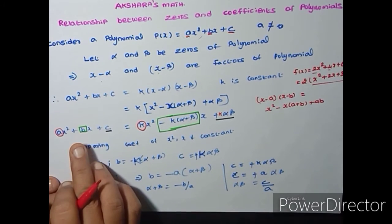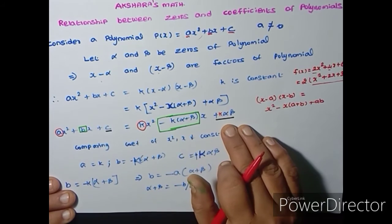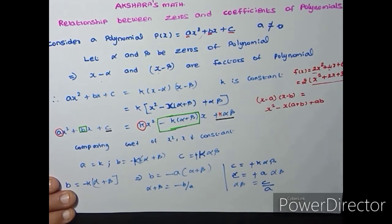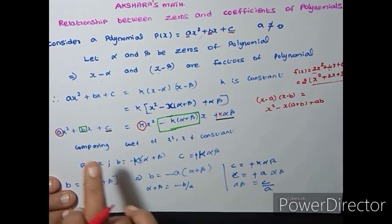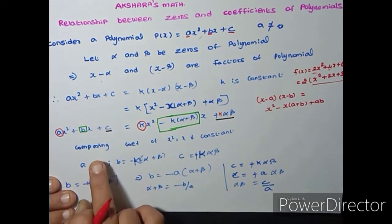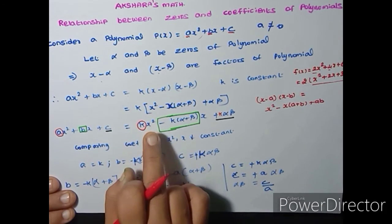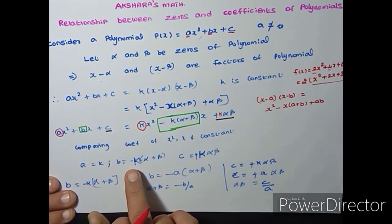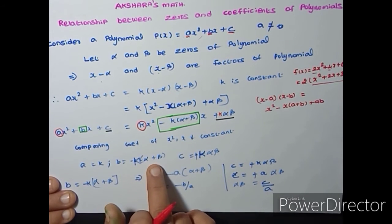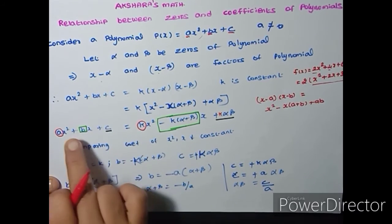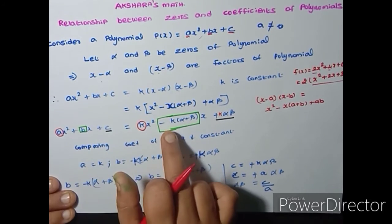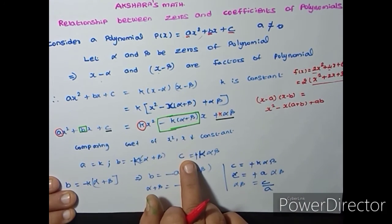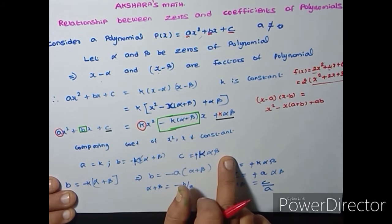I have Ax² + Bx + C on one side and Kx² − K(alpha + beta)x + K·alpha·beta on the other side. Comparing both sides, the coefficient of x² gives A = K. Comparing the coefficient of x gives −K(alpha + beta) = B. I have marked it with the same color. And comparing the constant term gives K·alpha·beta = C.